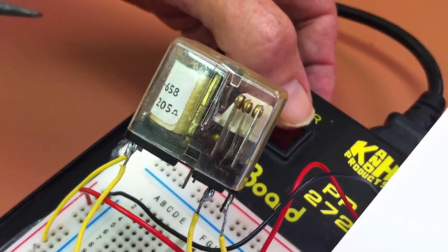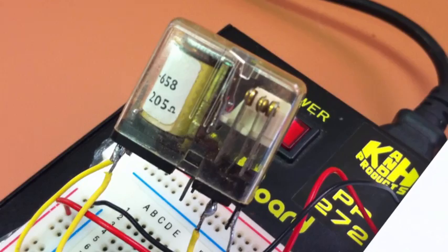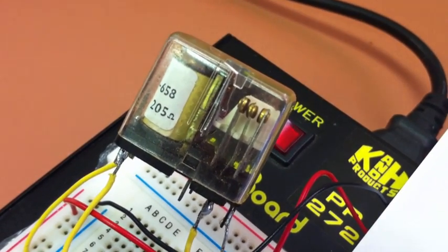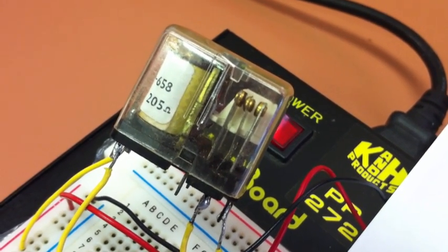So we turn it on here now and it comes up in the on condition. Okay, so we do a sharp clap and as you can see, the contact is open. So the light would be off at this point in time.